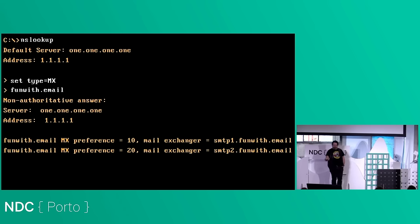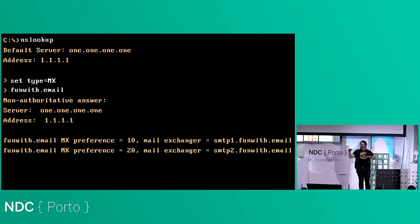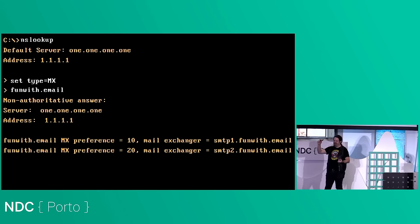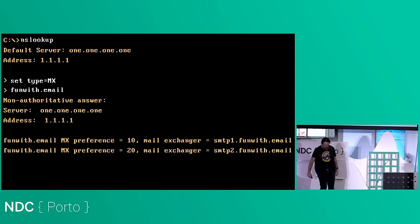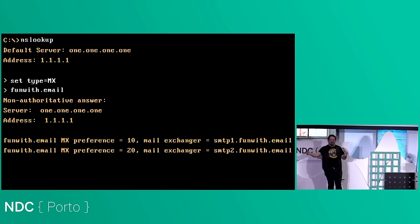The NS lookup comes back with mail exchangers SMTP1 and SMTP2, with a number called preference. Priority is a stupid name for it — a server with preference 10 is higher priority than preference 20, so lower number wins. That says: try this one first, if you can't reach it try this one, and if you can't reach either, go away for half an hour and keep trying for four or five days.